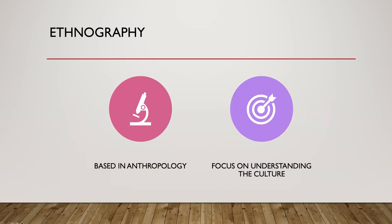Ethnographies come out of the field of anthropology. Basically, you're exploring cultural phenomena from the point of view of the subject, as opposed to the researcher. In the 1900s through the end of World War II, a lot of ethnographies were performed from the viewpoint of the researcher applying their Western worldview on the culture of the community at study — but that's not how it should be done. The overall point of ethnography is basically to understand the culture of the people under study.